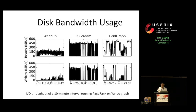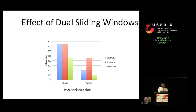This figure shows the IO throughput of a ten-minute interval during the computation of PageRank on the Yahoo graph. We can see that X-Stream and GridGraph can utilize the full bandwidth, while GraphChi cannot fully utilize due to the fragmented access pattern across many shards. This chart shows the effect of dual sliding windows. You can see that by streaming over the edges only once, and no need to mutate the edges or write out the updates, both our input amount and output amount is the minimum among all the three systems for large-scale graphs like Yahoo, where vertices cannot be fit into memory.